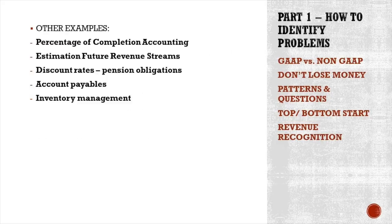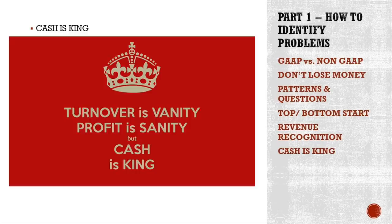Other examples to watch include: percentage-of-completion accounting, estimation of future revenue streams, discount rates, pension obligations, accounts payables, and inventory management. You can read more in the report on my investment course — it's a 70-page report and I can't make two-hour videos to explain everything in detail. Cash is always king: turnover is vanity, profit is sanity, but cash is king.